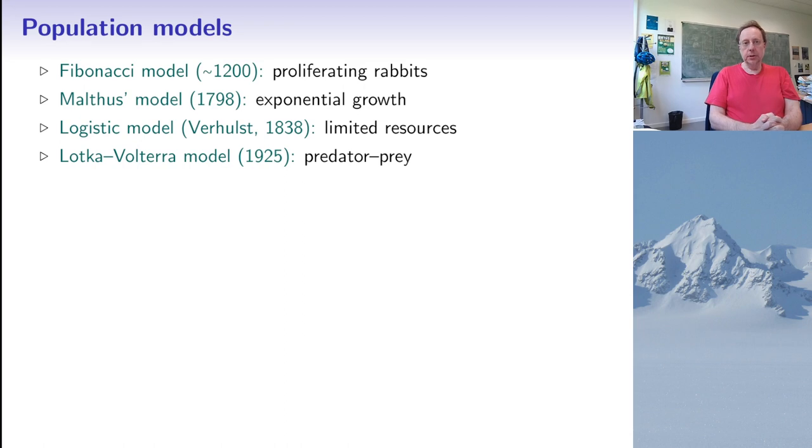Now population dynamics is quite an important subject in mathematics. There are many different models for that. Perhaps the oldest known model is the model involving Fibonacci numbers. So I'm pretty sure all of you know about the sequence of numbers. So you start with one and one and then each new number in the sequence is the sum of the previous two numbers. So the sequence is 1, 1, 2, 3, 5, 8, 13, 21 and so on.